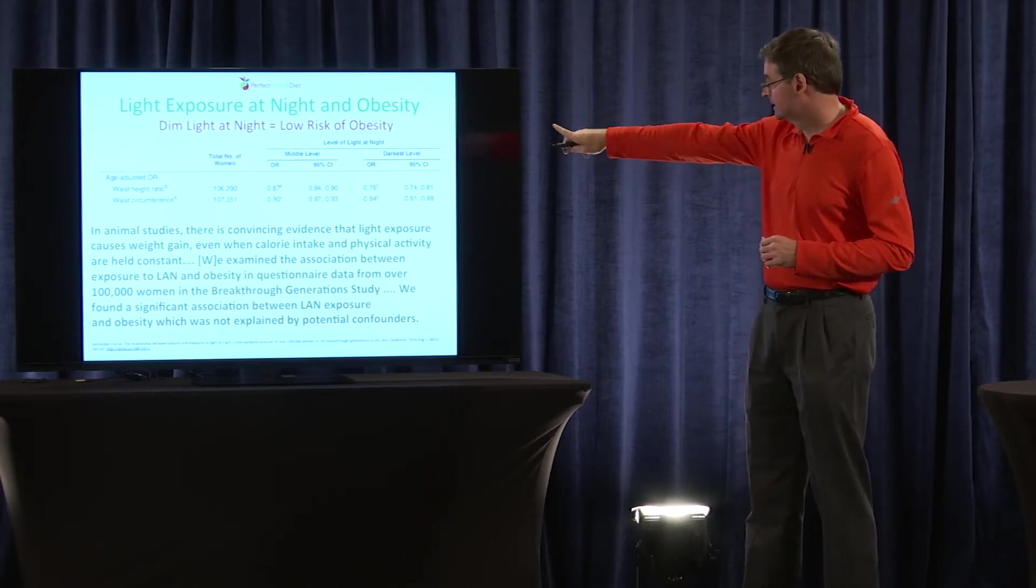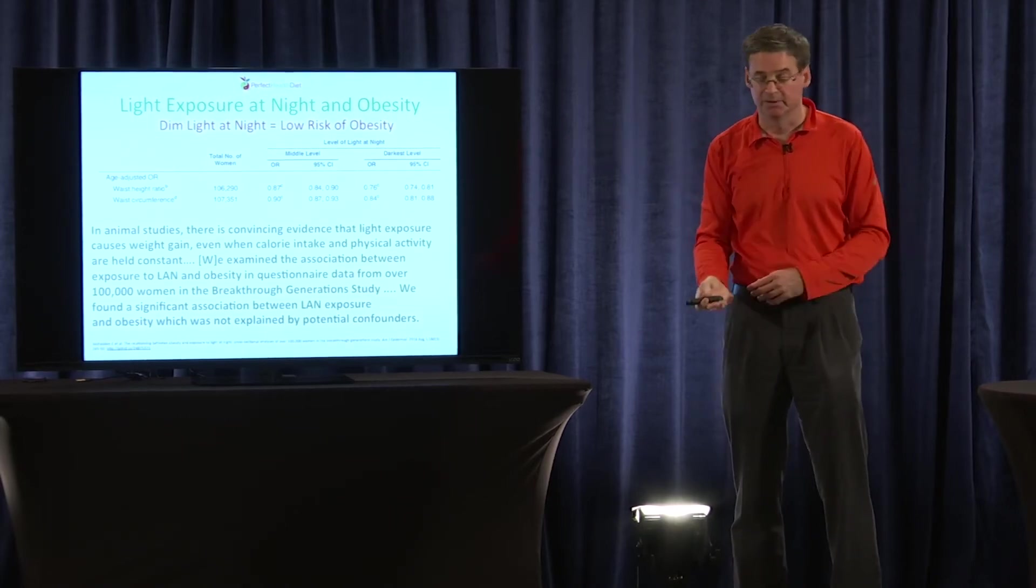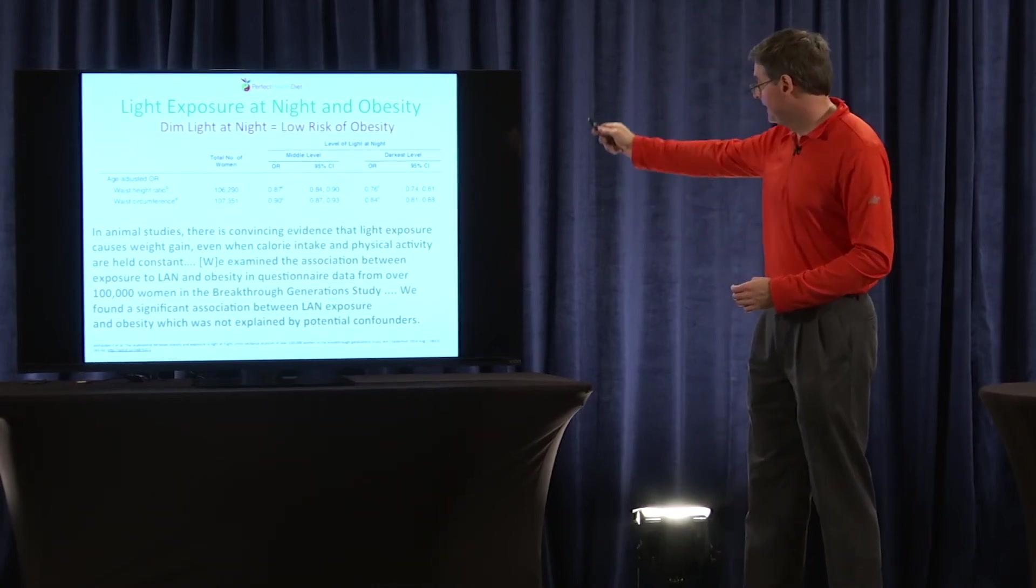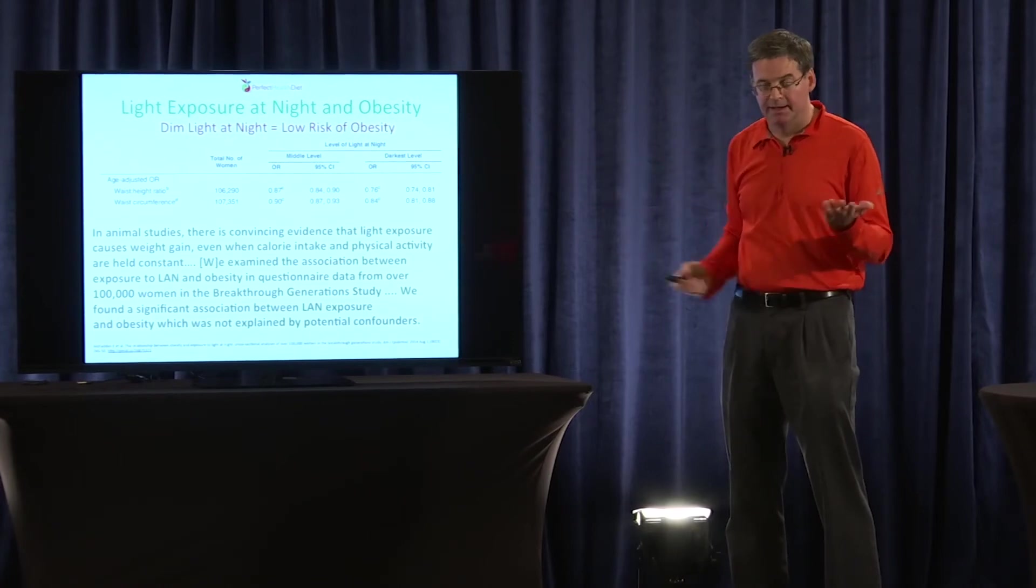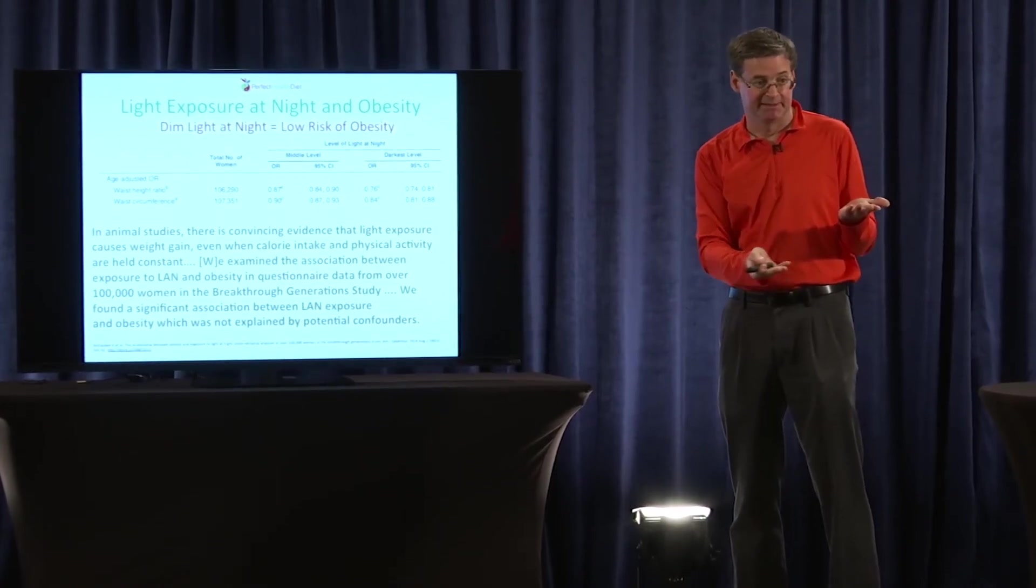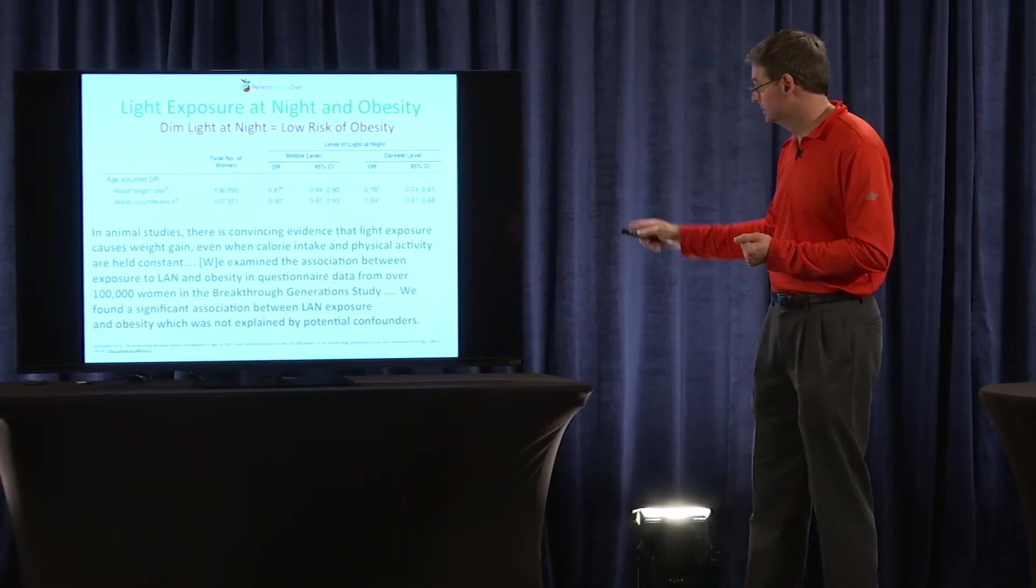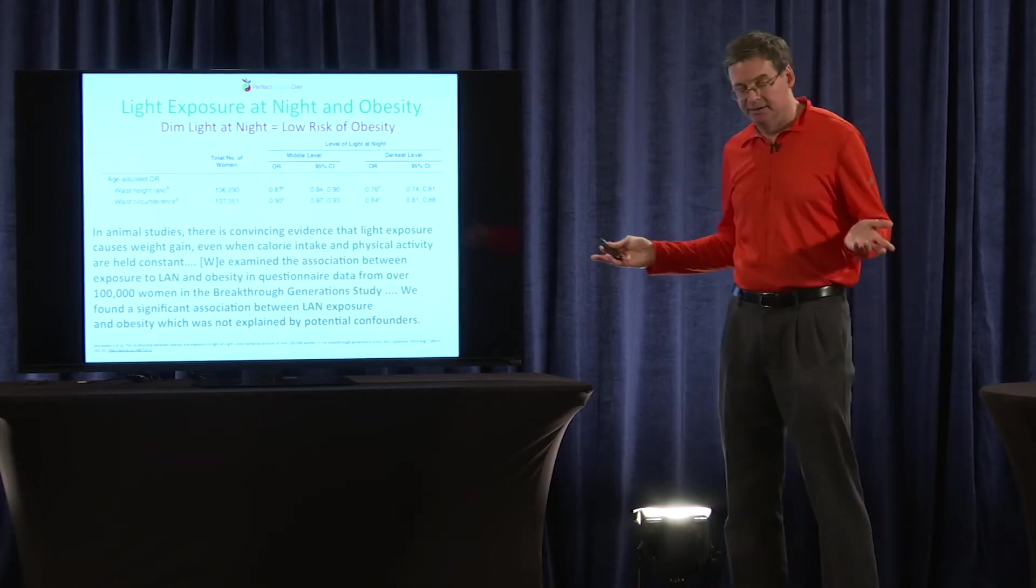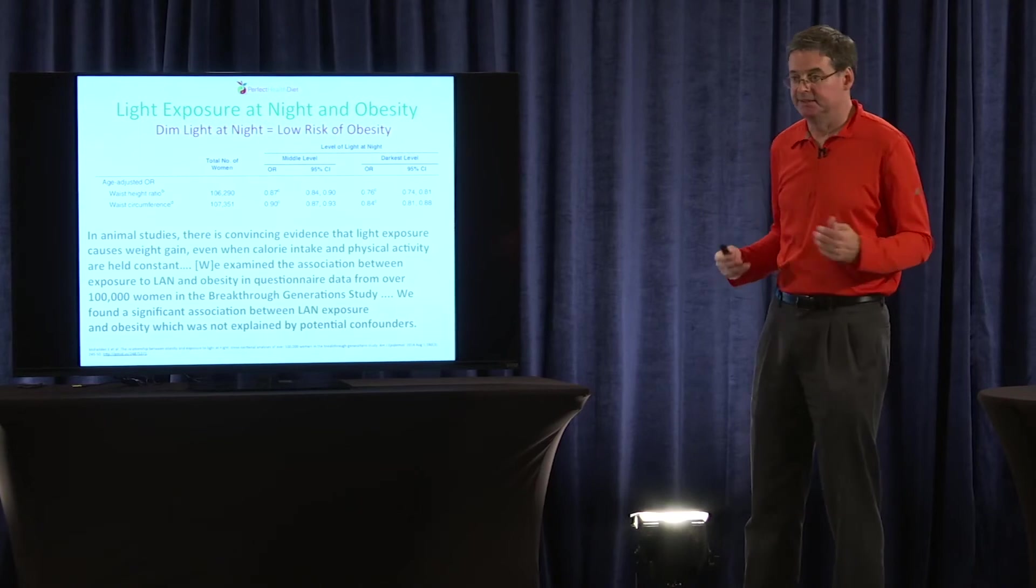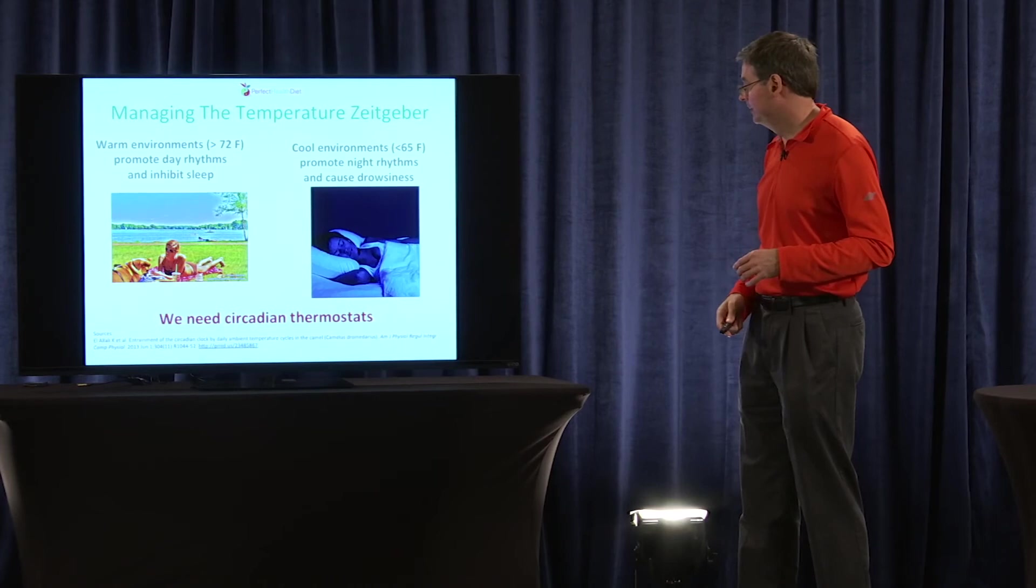So in this study, they split light exposure up into three groups, a low light group, middle light third, and a high light third. And the people with middle amounts of light exposure at night had 10% less obesity than people with highest light, and people with the lowest light exposure had 20% less obesity. And we know that circadian rhythm disruption causes obesity in animals. So this is very consistent with what we know.